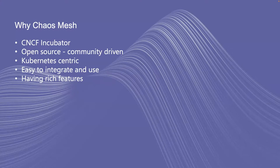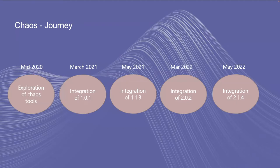Let's talk about our journey to chaos. In the mid of 2020, around the August-September timeframe, we thought it was very much required to provide chaos at the platform level itself — since Ethos is a collaborative platform — so that all the tenants running on our clusters can make best use of chaos and make their systems more resilient. That's when we explored a couple of tools and decided to go with Chaos Mesh.